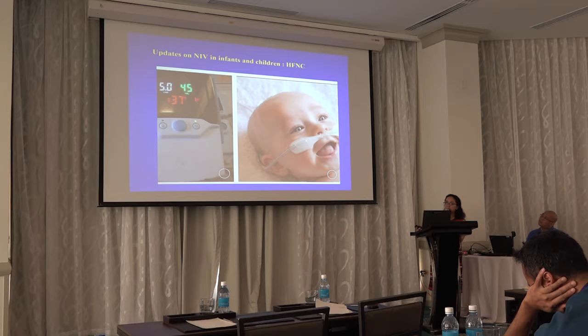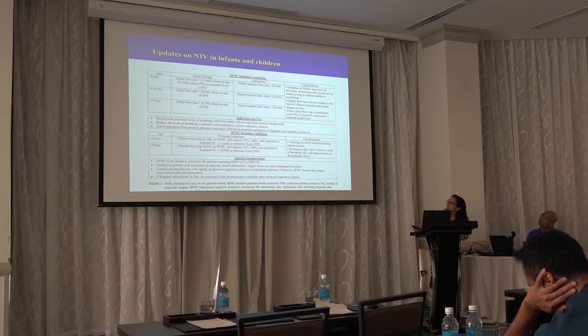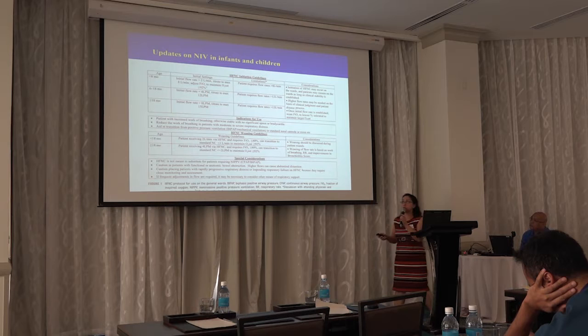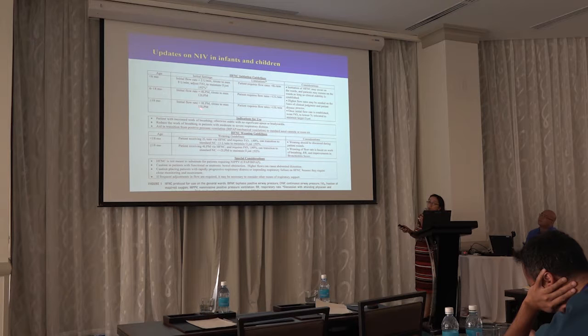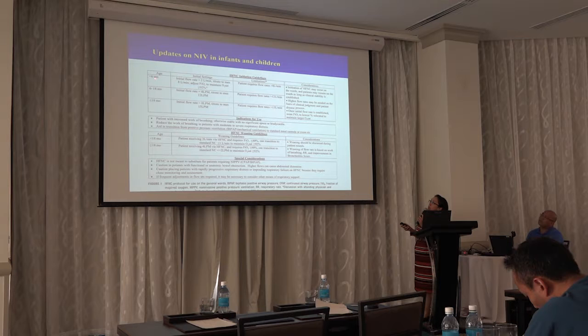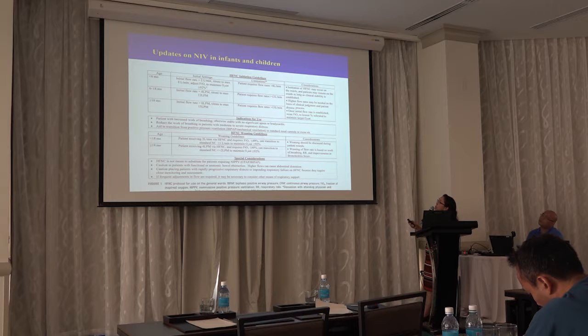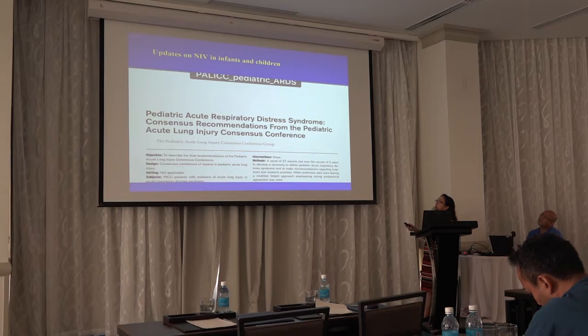Studies from New England found that introducing high-flow nasal cannula in the pediatric ward decreased the number of days patients stay in hospital. Regarding protocols for different age groups: for infants less than 6 months, 2 liters and above is considered high-flow; 1 to 6 months, 2 to 8 L/min; 6 to 18 months, 4 to 12 L/min; 1 to 18 years, 8 to 50 L/min. Anything beyond these ranges risks barotrauma. Using HFNC decreases hospitalization stay and cost.